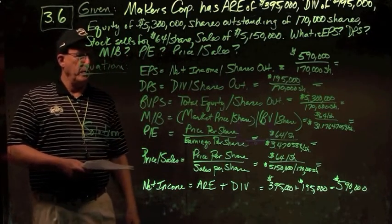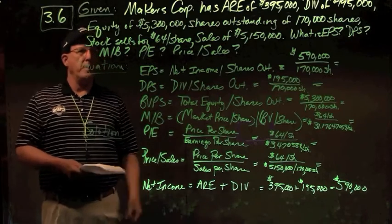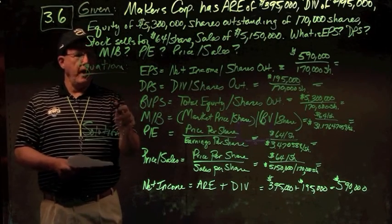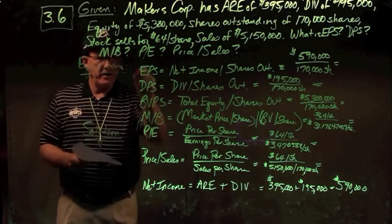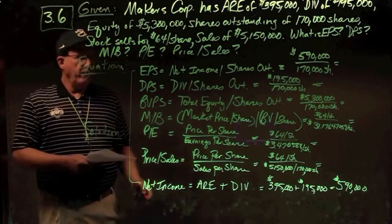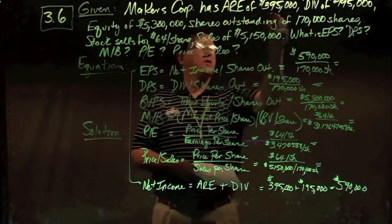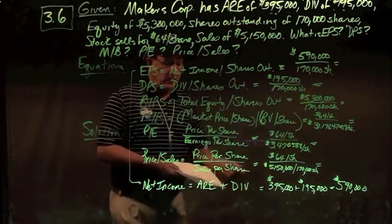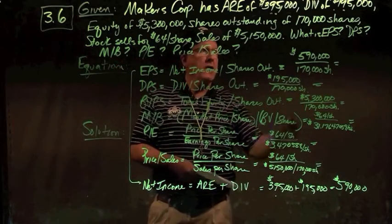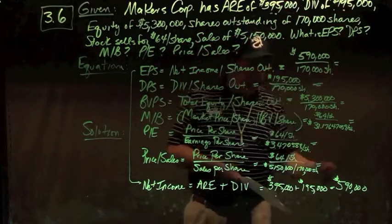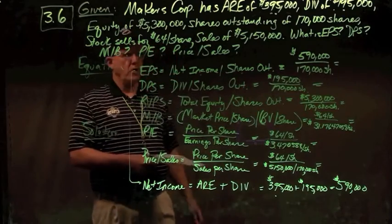Earnings per share is net income divided by shares, but net income isn't given. Using the given-equation-solution model, I need to calculate net income first. Net income equals additions to retained earnings plus dividends: $395,000 plus $195,000 gives net income of $590,000. Earnings per share is then $590,000 divided by 170,000 shares, giving $3.47 per share.